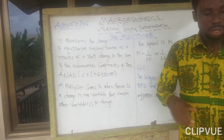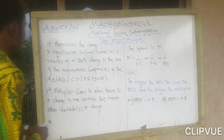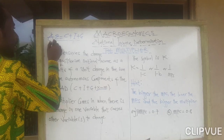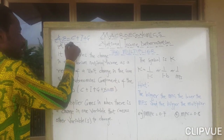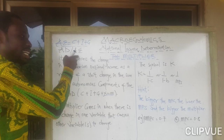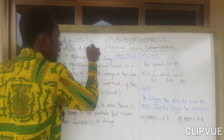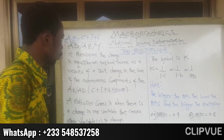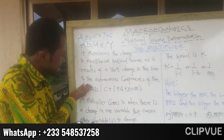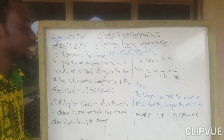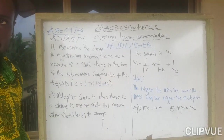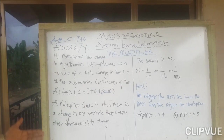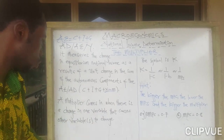Aggregate expenditure is the same as aggregate demand, and aggregate demand is the same as income or output. So if I mention equilibrium national income, it is the same as aggregate demand or aggregate expenditure.